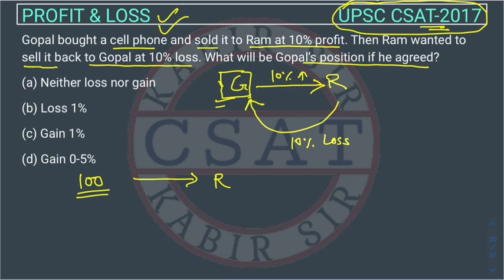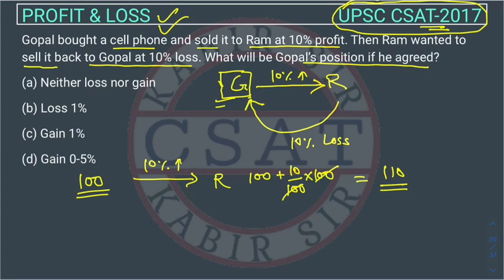Now he sold it to Ram with 10% profit, so it will become 100 plus 10% of 100, which gives 110. So Ram paid 110 rupees to Gopal and bought the mobile.